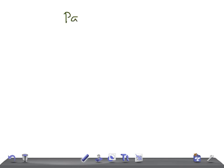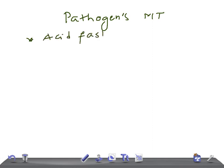Before discussing the pathogenesis of Mycobacterium tuberculosis, I would like to brief you on the genus features of Mycobacterium. The most important thing you should remember about these bacteria is they are acid fast — very important. They are also obligate aerobes; they need oxygen to survive.